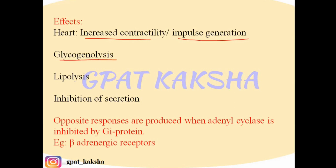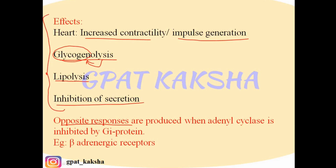Other effects include glycogenolysis (breakdown of glycogen), lipolysis (breakdown of fat), and inhibition of secretion. Opposite responses are produced when adenyl cyclase is inhibited by GI protein. GI protein leads to inhibition of the adenyl cyclase pathway and thus produces opposite effects of all the above mentioned effects. An important example is the beta adrenergic receptor, which acts through the cyclic AMP pathway or adenyl cyclase cyclic AMP pathway.